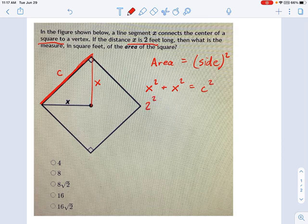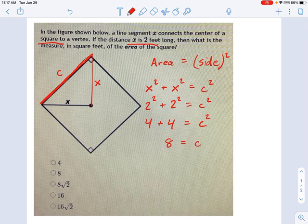Remember what x is? We were given that. It's 2. So 2 squared plus 2 squared equals c squared. And that means 4 plus 4 equals c, I'm sorry, c squared. And that means c squared equals 8.